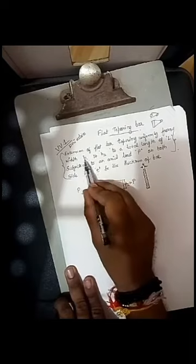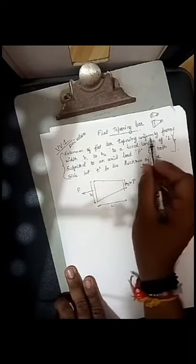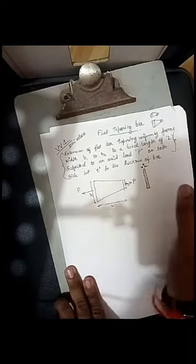said width from B1 to B2 taper uniformly. Uniformly means slowly, like uniform. There is no sudden graduation—no sudden tapering, but uniform tapering from B1 to B2.